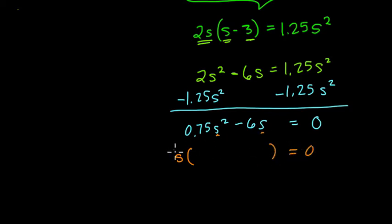S times what would give me 0.75S squared? And I ask that question because we don't want to change the value of anything here. We want to keep everything the same, just write it in a different form. So S times 0.75S. If we multiply those two terms, two values, we would get 0.75S squared. Then we're subtracting, so S times what would give us 6S? Well, S times 6 would give you 6S.